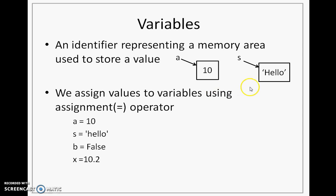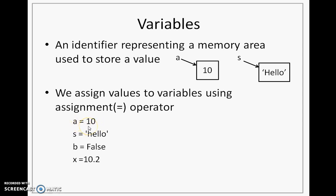The same applies to this variable S. A memory area is created in which there is a string, or a sequence of characters that are stored, and S is representing or referring to that memory area. That is why S is also a variable. If I want to create a variable, in Python we use an assignment operator. So for creating the scenario where A equals 10, when I do that, 10 is created in memory and A starts referring to it. In simple terms, we say that 10 is assigned to A.